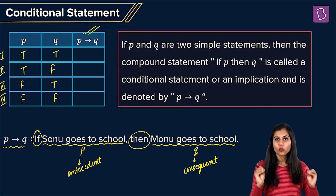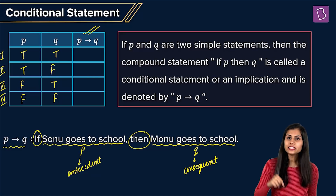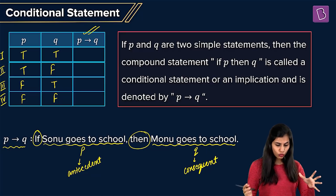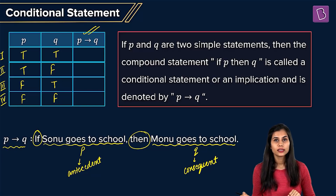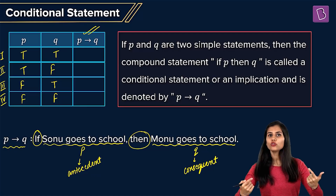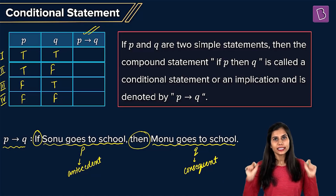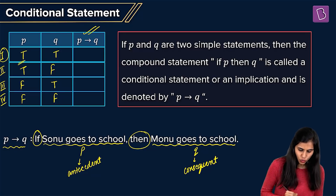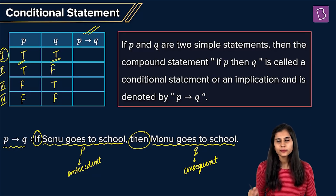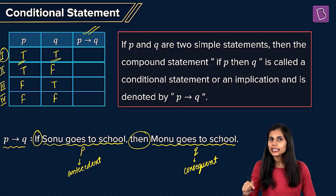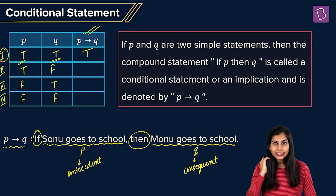To evaluate these, interpret the language of the statement very carefully. It says if Sonu goes to school, then Monu will go to school — there is a pact, a deal, that if Sonu goes, Monu will definitely go, and this deal should not be violated. In the first scenario, Sonu goes to school and Monu goes to school — both P and Q are true. This does not violate the deal, so the outcome is true.